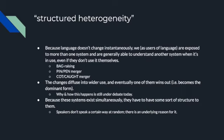The changes that occur diffuse into wider use, and eventually one of them wins out — becomes dominant. Why and how this happens is still under debate today; we don't really know. These systems exist simultaneously, sometimes even within the same person, and so they have to have some sort of structure. Our heterogeneity, our variability, has to be structured — otherwise it'll just be a really confusing mess. Speakers don't speak a certain way at random; there's an underlying reason for it, whether conscious or unconscious.